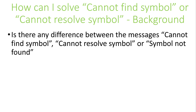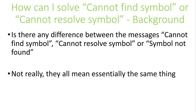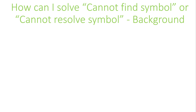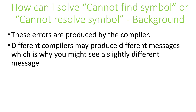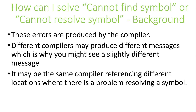The compiler is telling you that it cannot understand what the identifier means or where it comes from. Different compilers may produce slightly different error messages, or the compiler may find a different type of error, which will cause it to produce a different error message. So what can cause these problems? There are many causes, but we'll list a few of them here in the next few slides.